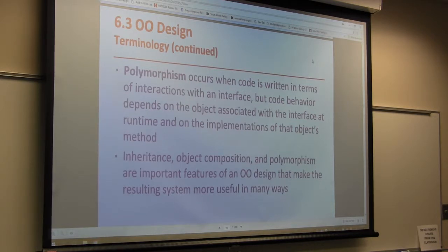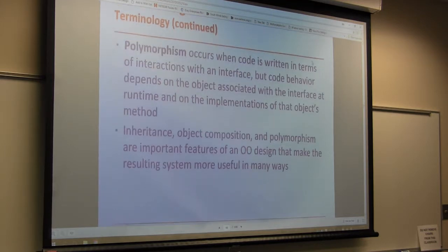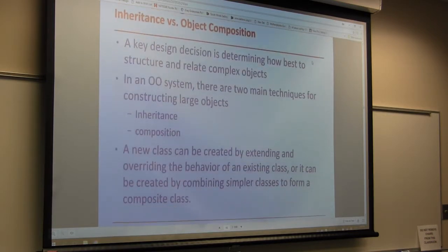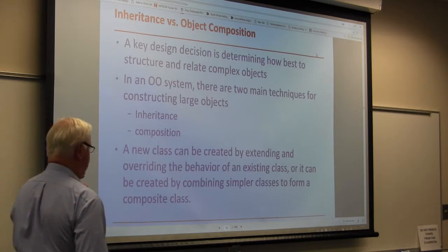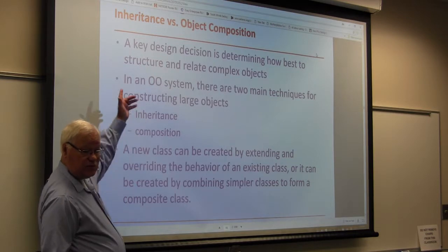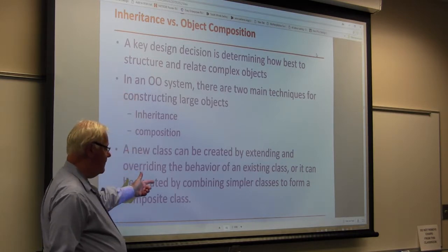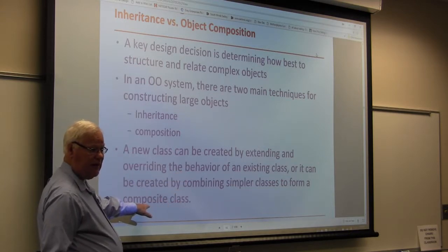We talked about polymorphism earlier — it has to do with what data we're calling and whether we can use different data in the same object, such as gallons versus parts versus parking hours. One of the design decisions we need to make is what objects we need, how they'll interact, and whether we'll use inheritance or composition.